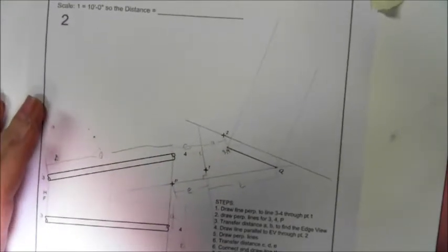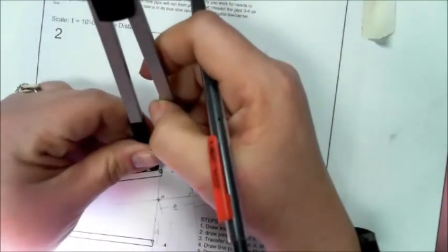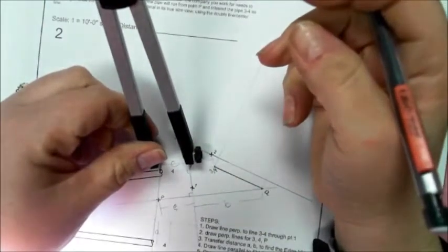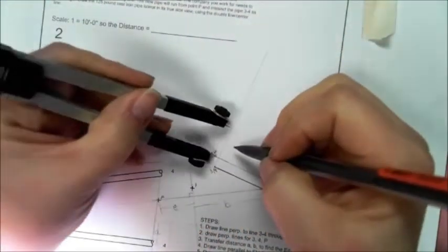So we're looking for those different measurements. Here goes nothing. Alright, let's go ahead and find C and transfer it. So there's C. C is going to come over on the 3-4.